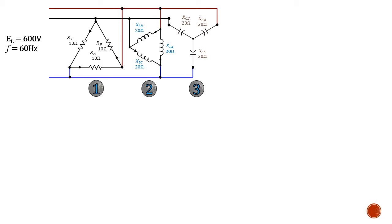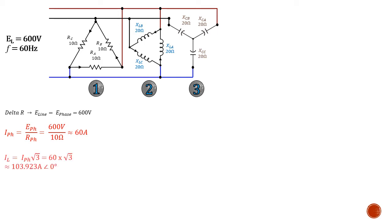Solving for the delta-connected R: in a delta, line and phase voltage are the same. Our resistance is given as 10 ohms per phase. Using our phase voltage and our phase resistance, we get 60 amps per phase in our resistive circuit. In a delta, the line current is larger than the phase current, so we compensate for that, giving us a line current of approximately 103.9 amps. Since it's resistive, it's at zero degrees — the current and voltage are in phase. With our line current in hand, we calculate the total resistive power, which works out to be 108 kilowatts.